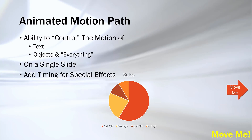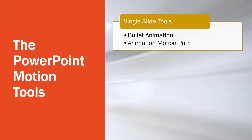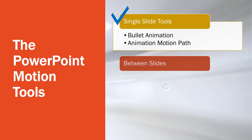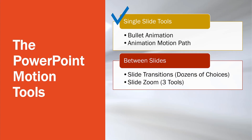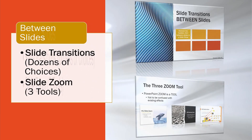The two tools of animation and animation motion path cover what can be done inside a single slide. Now let's go on to the next category — adding life between slide transitions in a slideshow — where we can find two more tools.